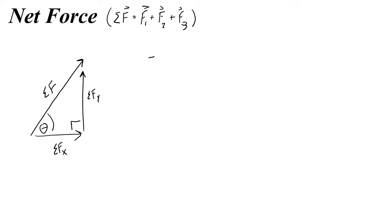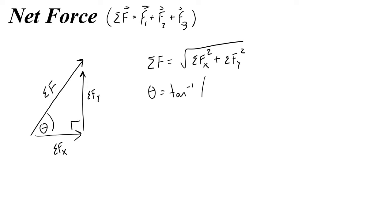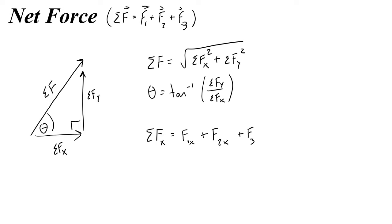Typical vector math is going to let us find the values for these things. If I want the magnitude, then I would do the square root of the x component squared plus the y component squared. And if I want to find the angle theta, then I can use the tangent inverse of the y component over the x component.